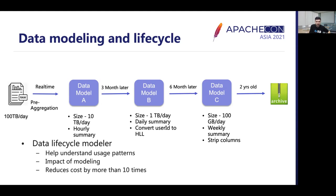After three months, since the business use case only requires daily transactional information, we changed the data model to provide a daily summary, reducing data size from 10 terabytes a day to 1 terabyte a day. We also converted user IDs to HyperLogLog since user-level details are no longer needed and we only need to count distinct users for retention analysis. Even queries involving count distinct are faster because of approximate algorithms. After six months, data is summarized further to weekly level and unneeded columns are dropped. Finally, after two years, the data is stored in archival storage for the longer term.